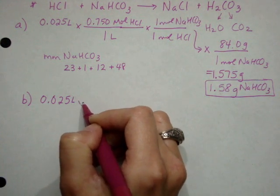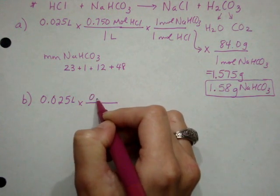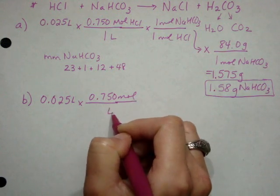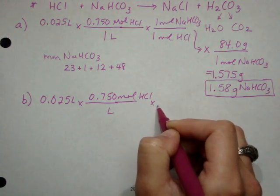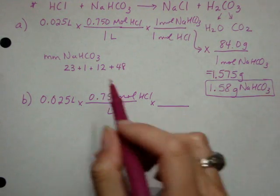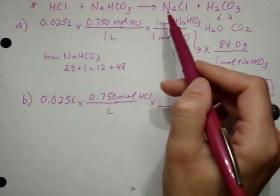So 0.025 liters of 0.750 moles per liter HCl. I'm not going to do any better. Look at there.